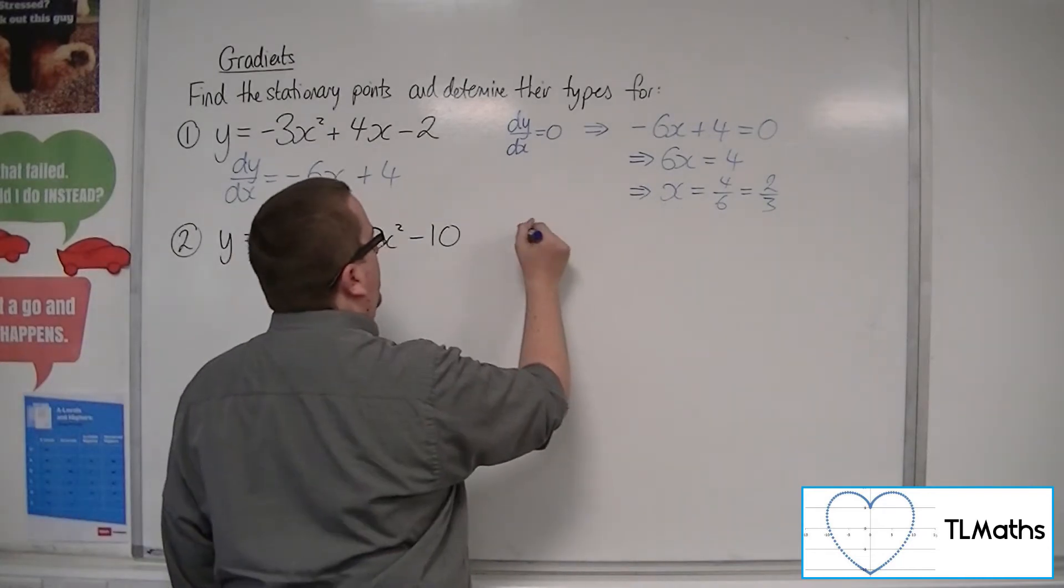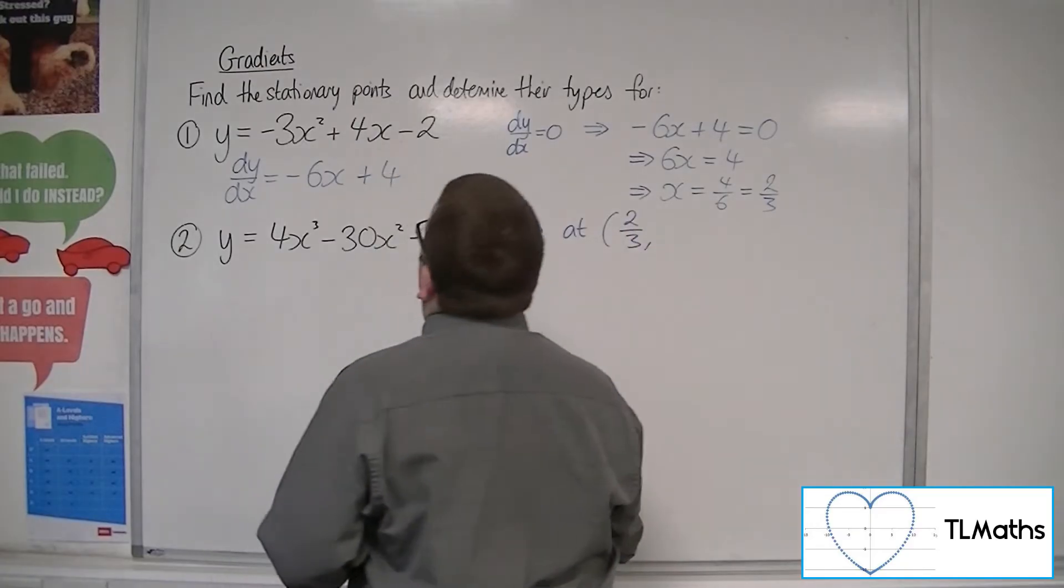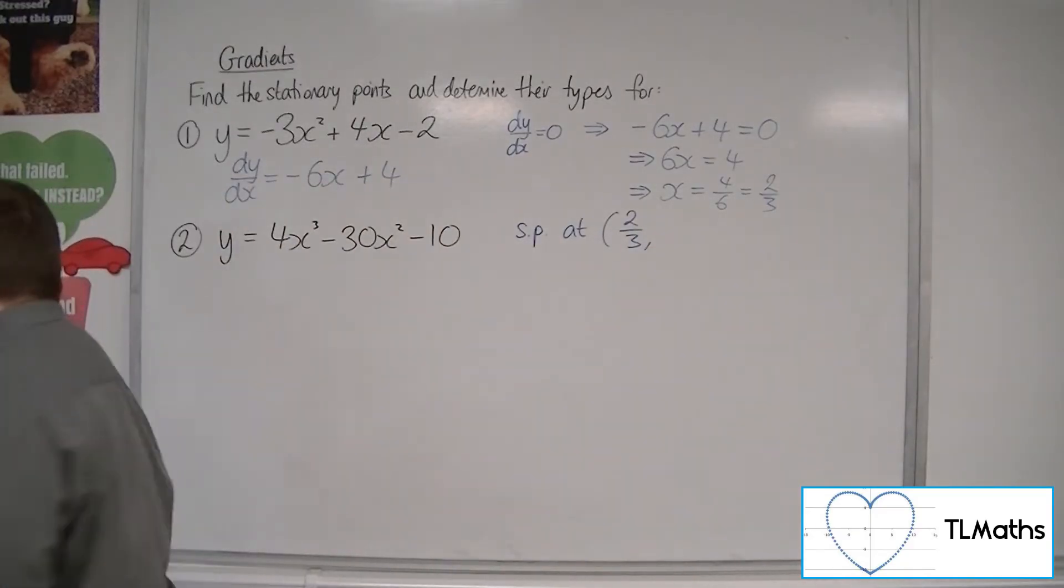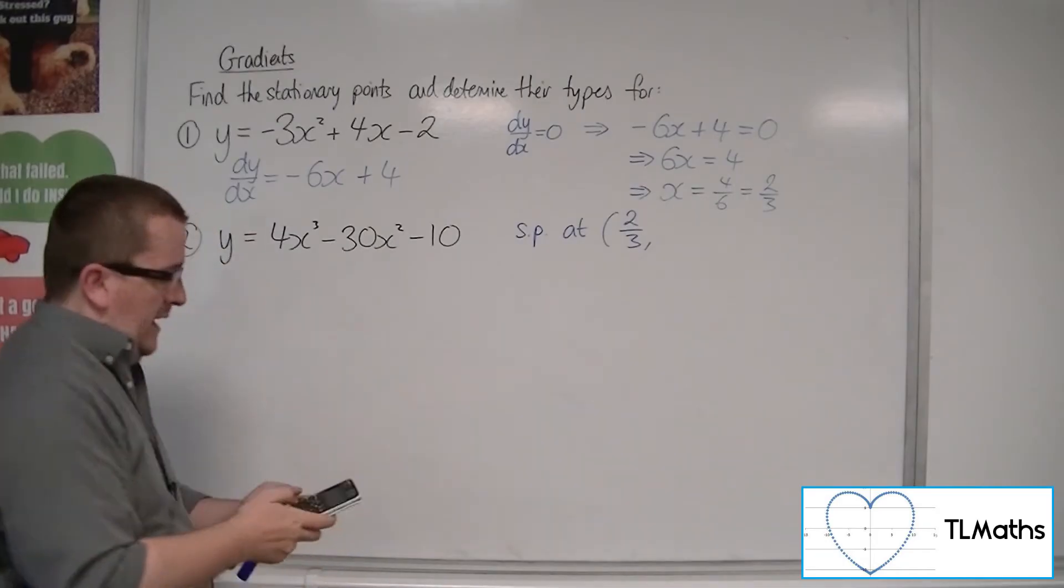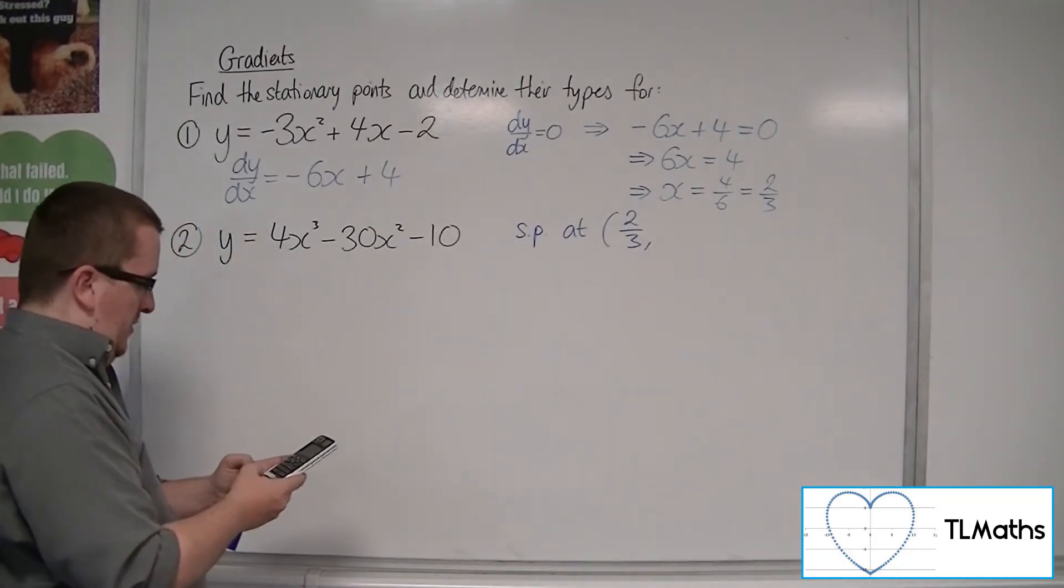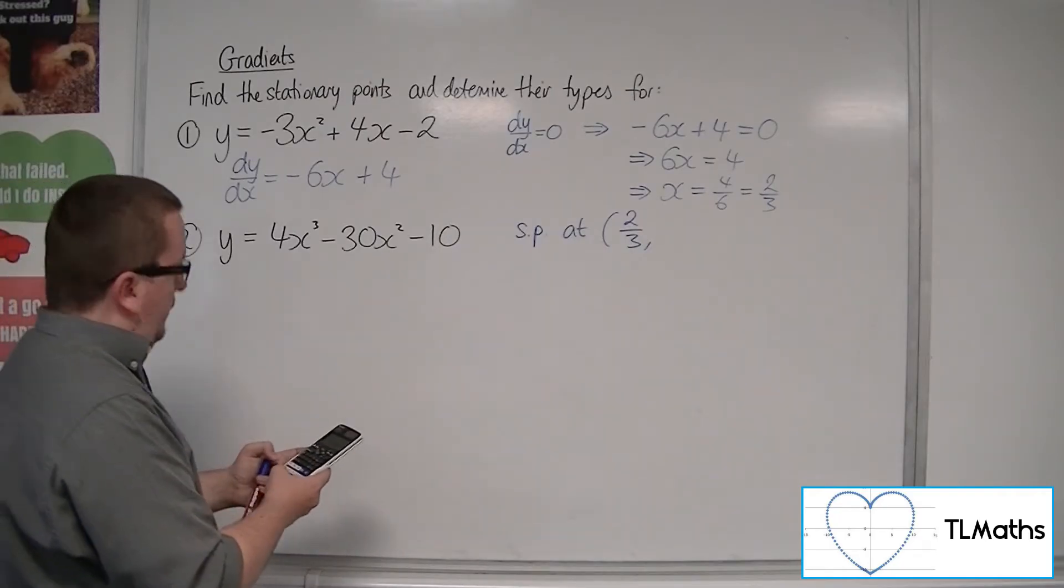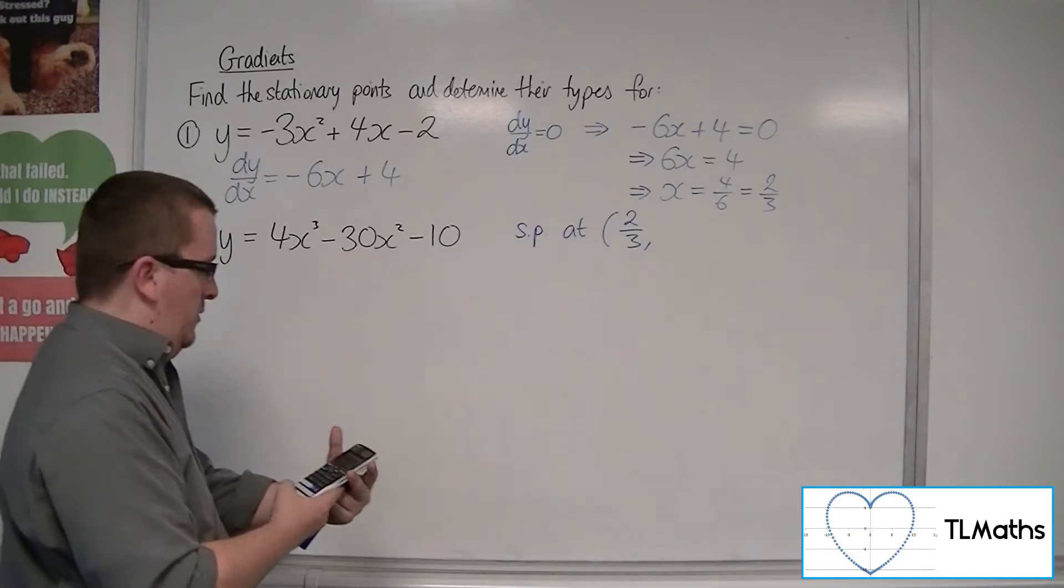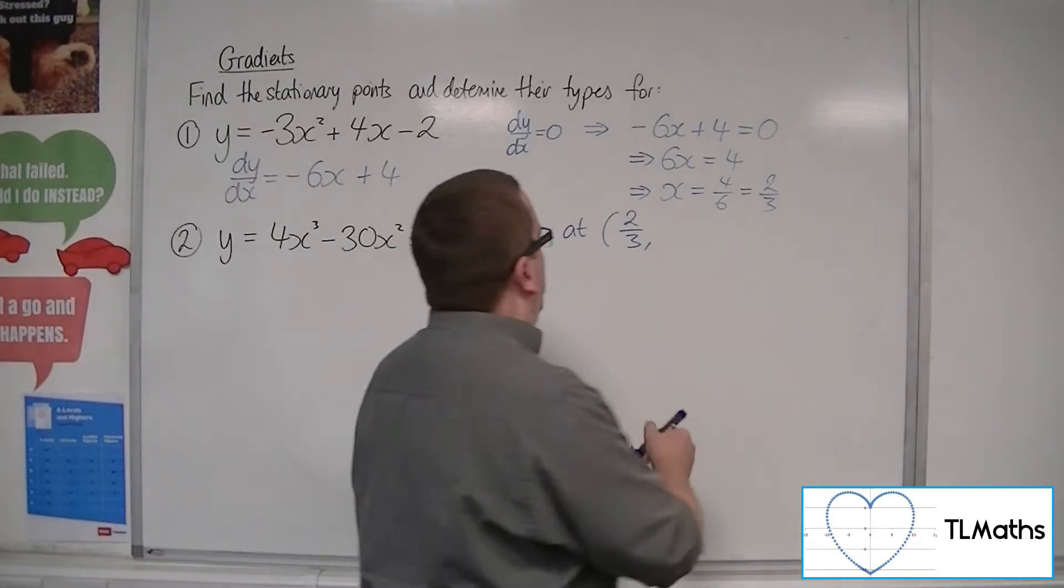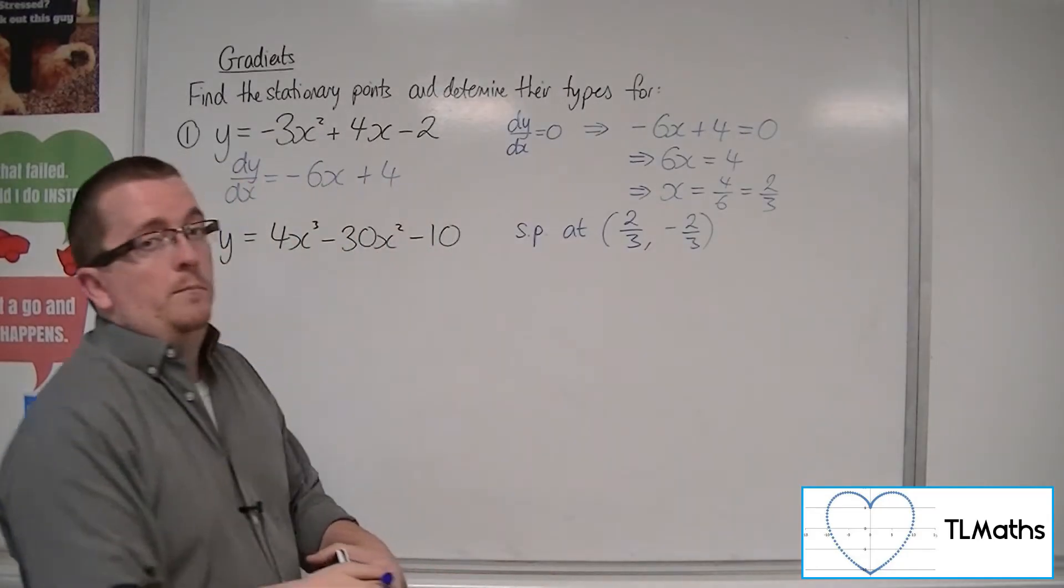So there is a stationary point at, well, the x-coordinate is 2 thirds. We can substitute 2 thirds into the quadratic. So minus 3 times 2 thirds squared plus 4 lots of 2 thirds, take away 2, so minus 2 thirds.